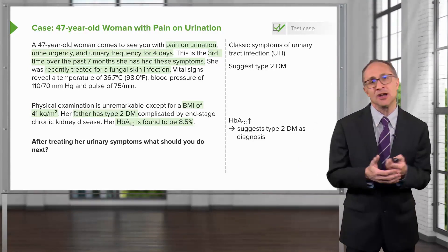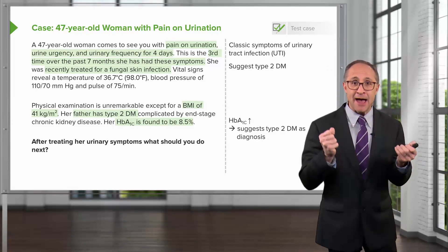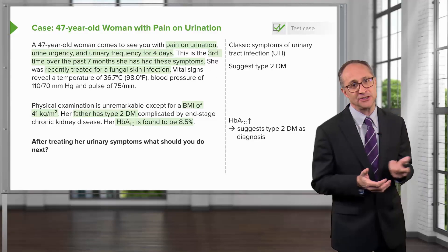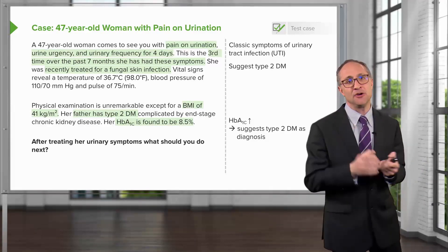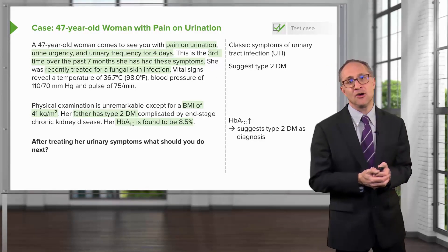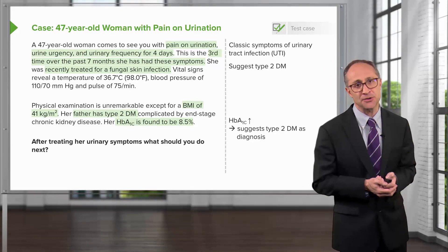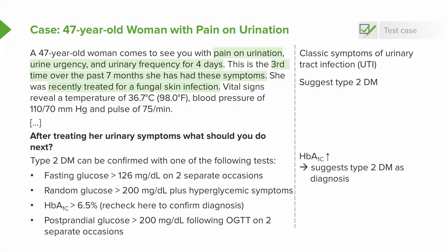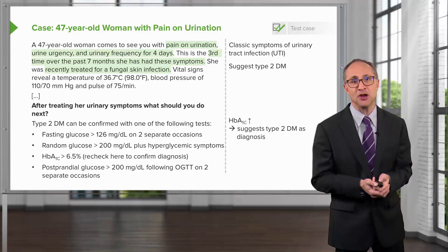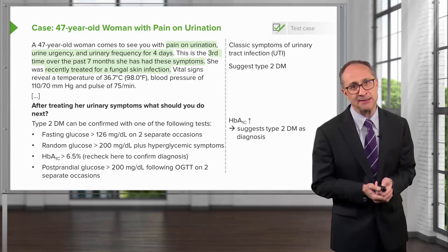This would also be the best answer on standardized testing. In this particular case, when we choose to confirm the diagnosis, we choose a repeat of her hemoglobin A1c rather than an oral glucose tolerance test or checking her fasting glucose. Clinically, it wouldn't be wrong to confirm the diagnosis using a different test — as long as the fasting plasma glucose was greater than 126 mg/dL or the hemoglobin A1c was greater than 6.5%, you can confirm the diagnosis. But this would be unlikely to be a correct response on a standardized test. The conclusion to this case is to recheck her hemoglobin A1c to confirm her diagnosis of type 2 diabetes.